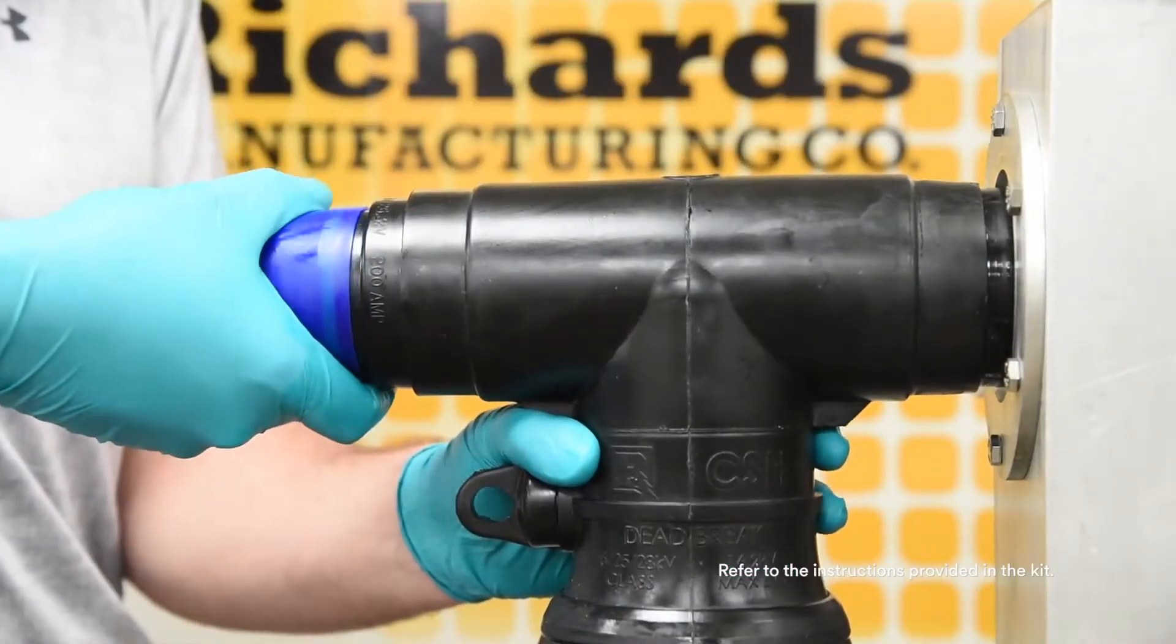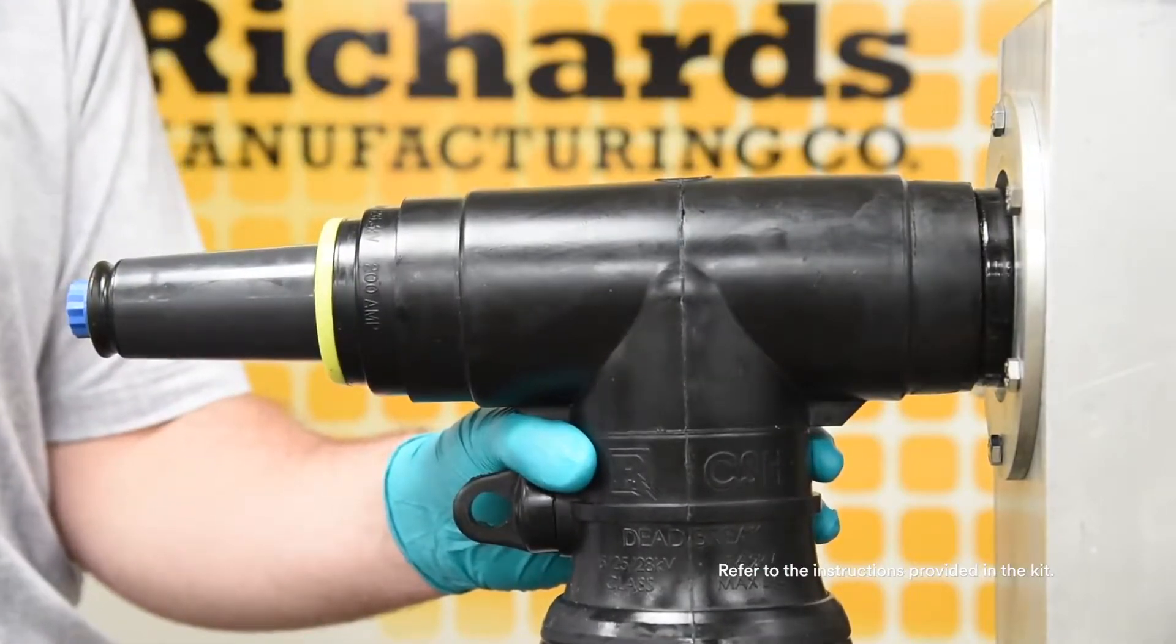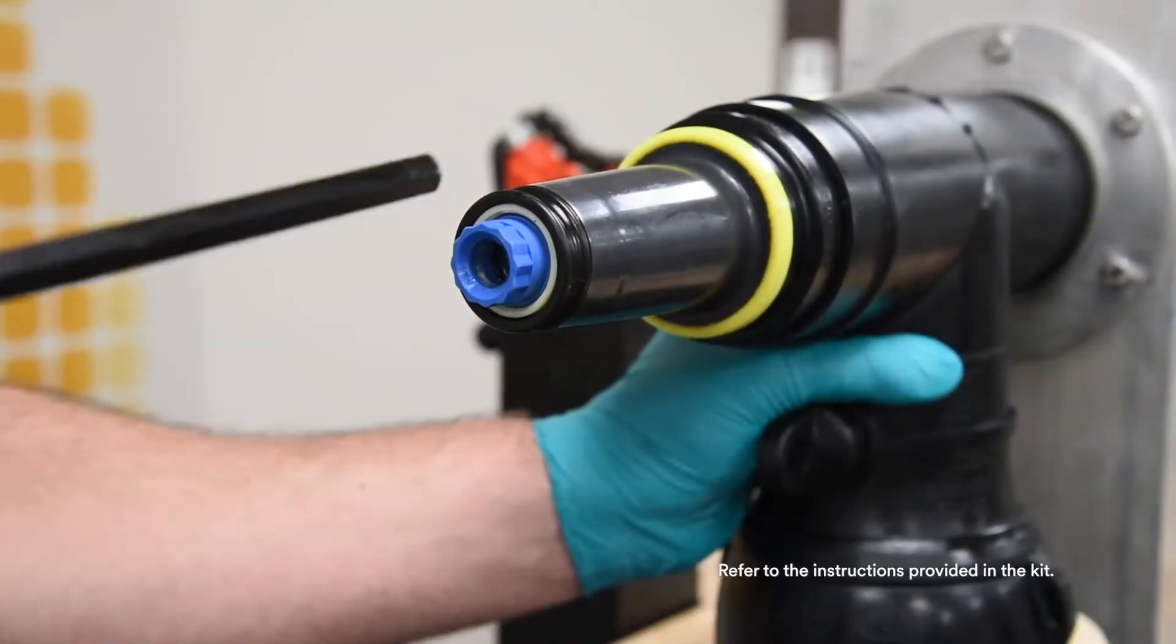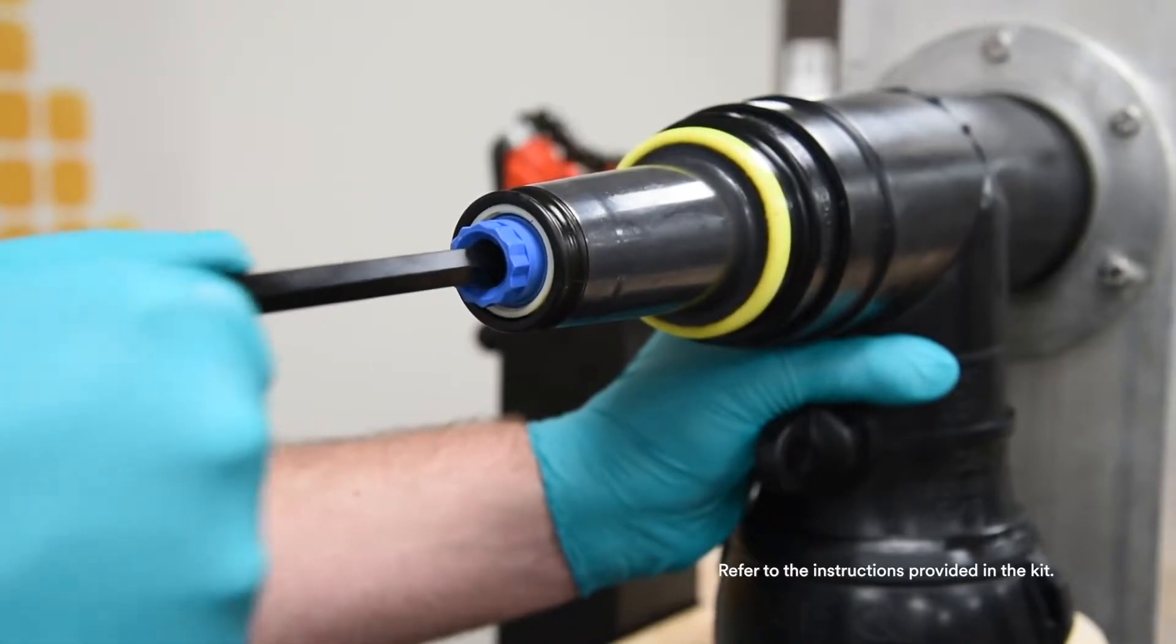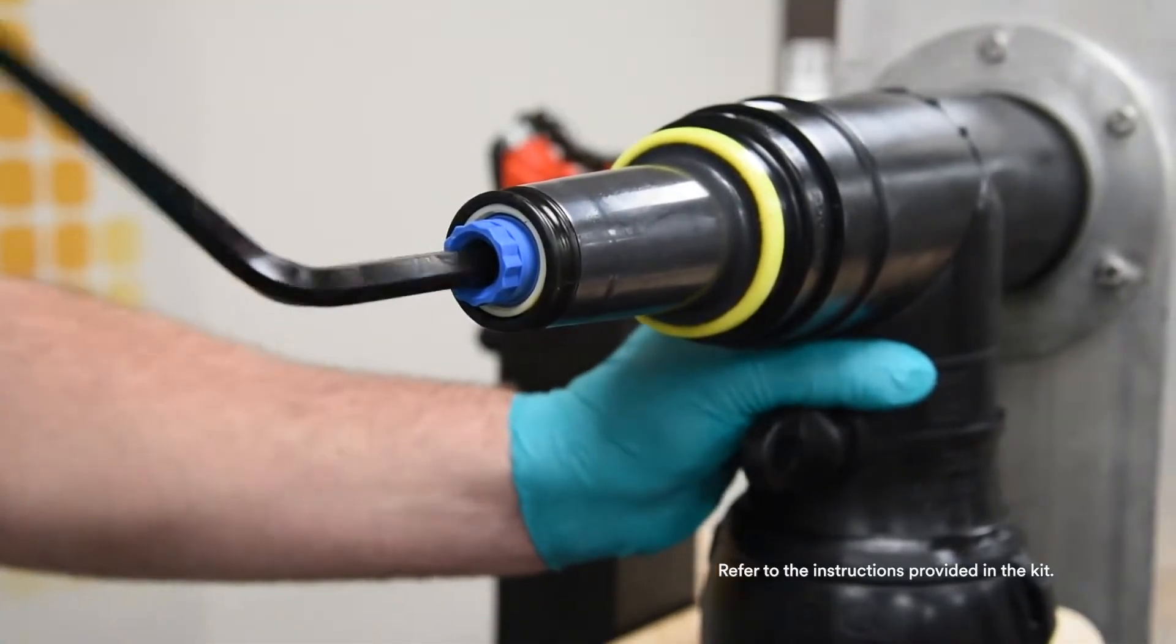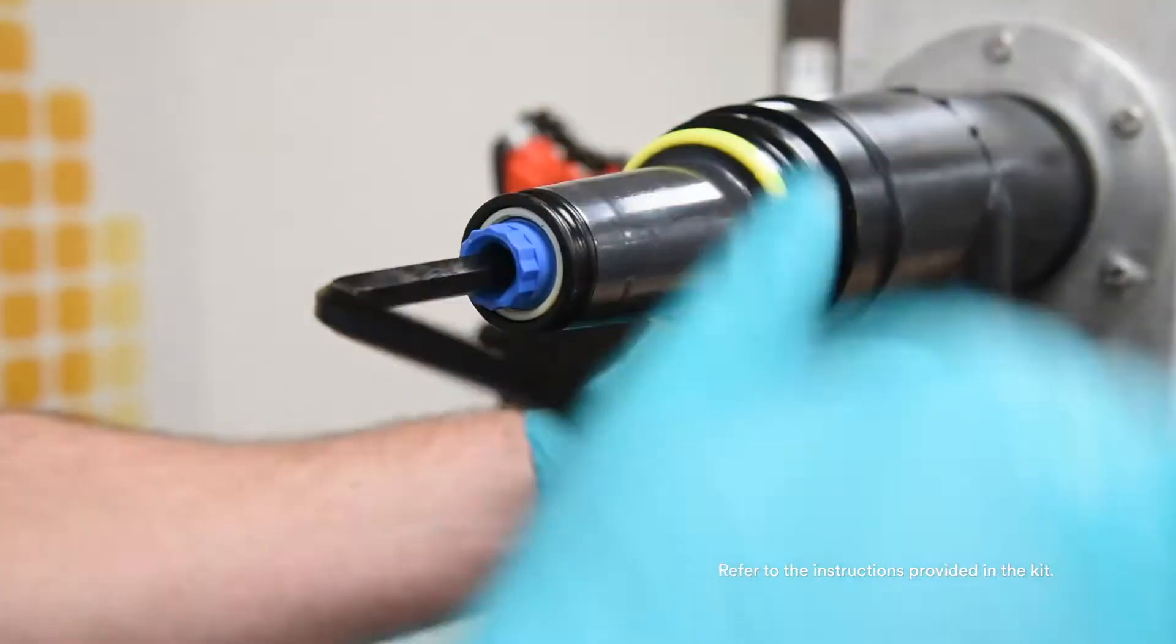Insert supplied disposable hex tool or approved alternative tool into CS8 load brake interface and engage hex broach of fastener. Rotate tool two to three turns to start thread engagement.